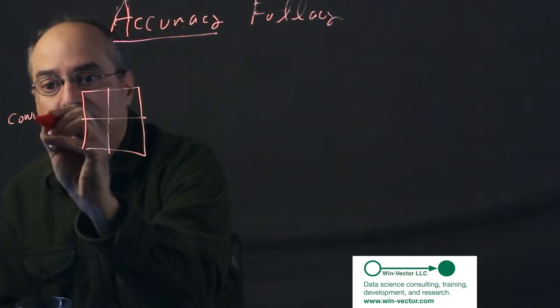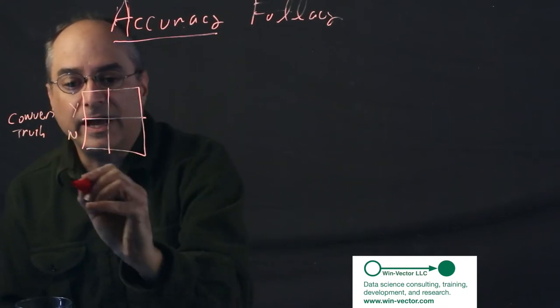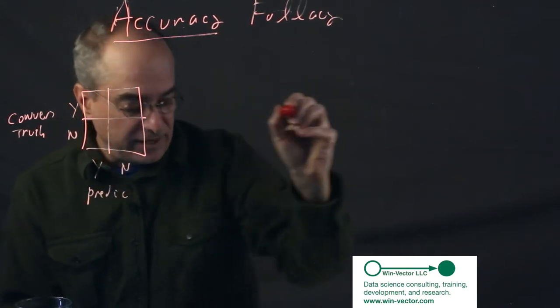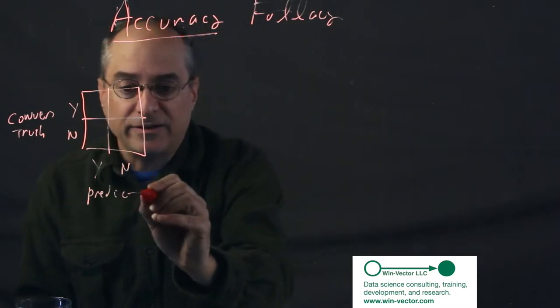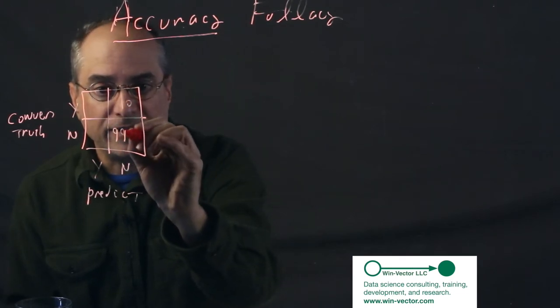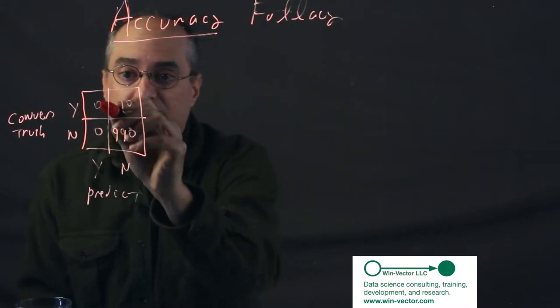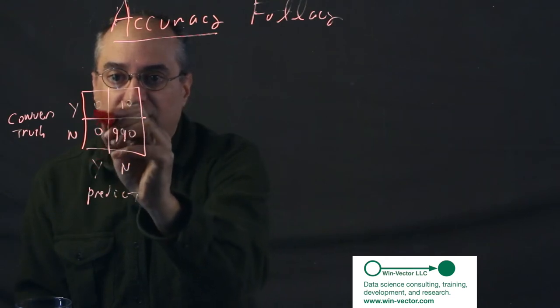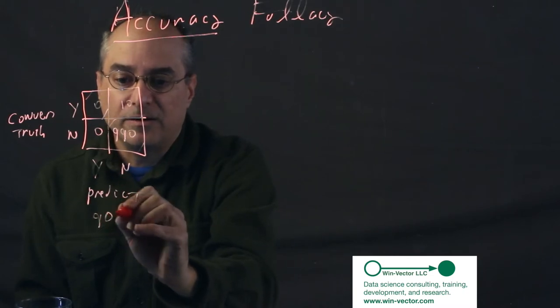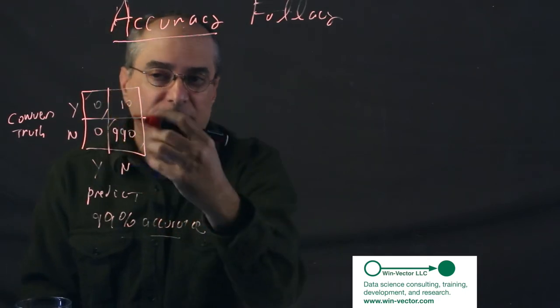We would get that basically the convert, which is the truth, is either yes or no, and the prediction is either yes or no. Now, perhaps we had a defective prediction that said nobody would convert, and we had a thousand instances in this data set, and accuracy is merely how much mass is in these two cells, the yes-yes cell and the no-no cell. So this is a 99% accurate classifier, which failed us miserably.